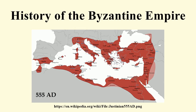His successor, Martian, refused to continue to pay this exorbitant sum. However, Attila had already diverted his attention to the western Roman Empire. After he died in 453, his empire collapsed and Constantinople initiated a profitable relationship with the remaining Huns, who would eventually fight as mercenaries in Byzantine armies.